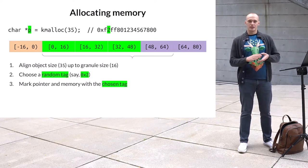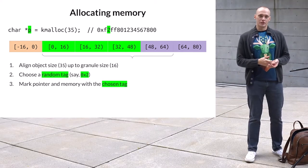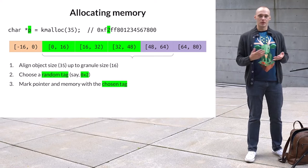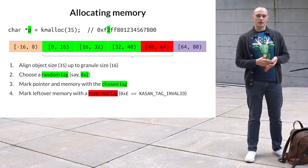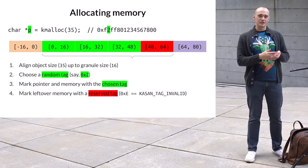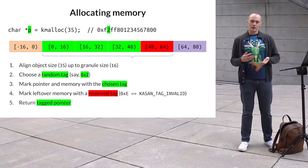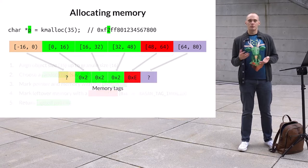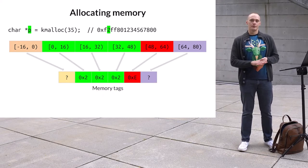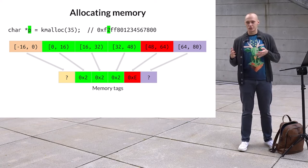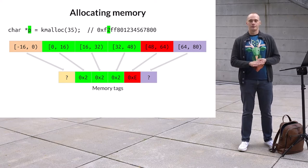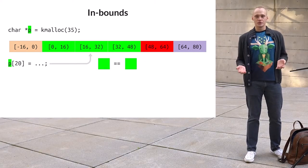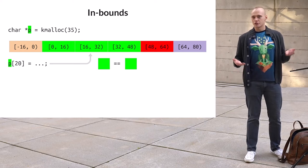Note that the allocator does not mark the whole object — it only marks enough memory granules to cover the requested size. The leftover granules are marked with the so-called invalid tag, which has the value E. This tag is reserved for marking inaccessible memory and is not one of the tags generated randomly. Finally, the allocator returns the tagged pointer. The first three granules and the pointer are marked with the generated tag 2, and the leftover granule is marked with invalid tag E. Now if the kernel accesses the object within its bounds, there will be no tag mismatch, which makes sense as there is no memory corruption.